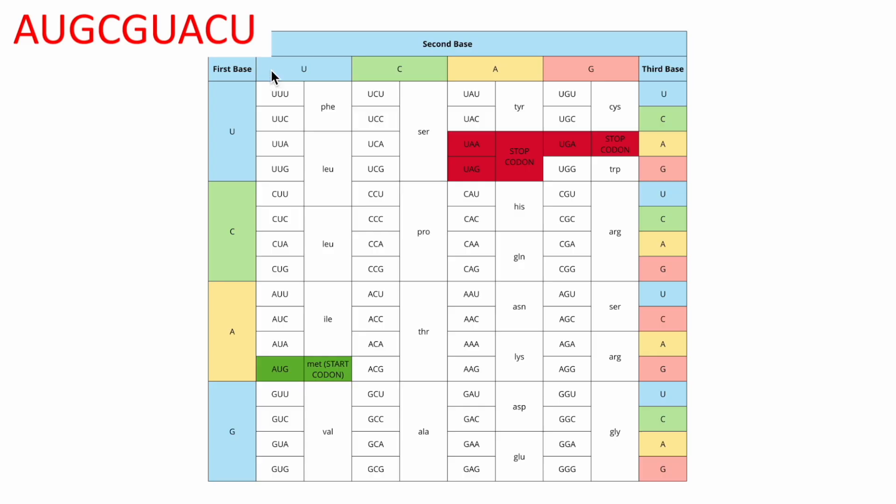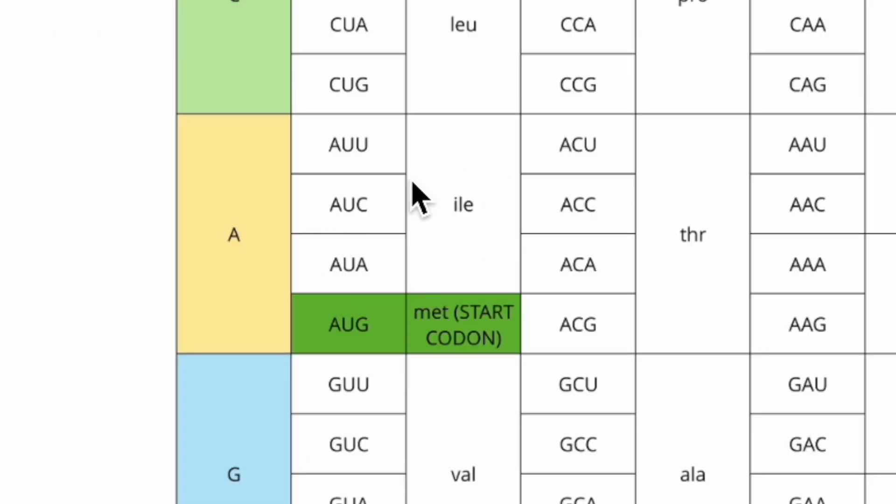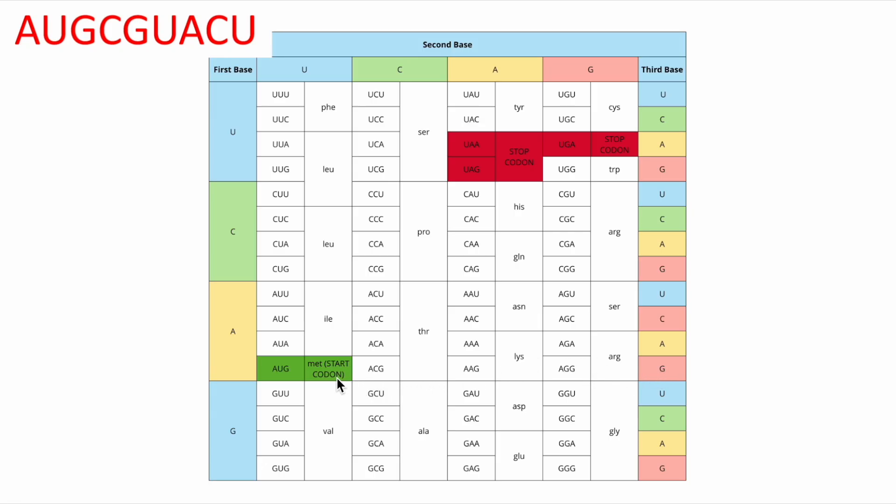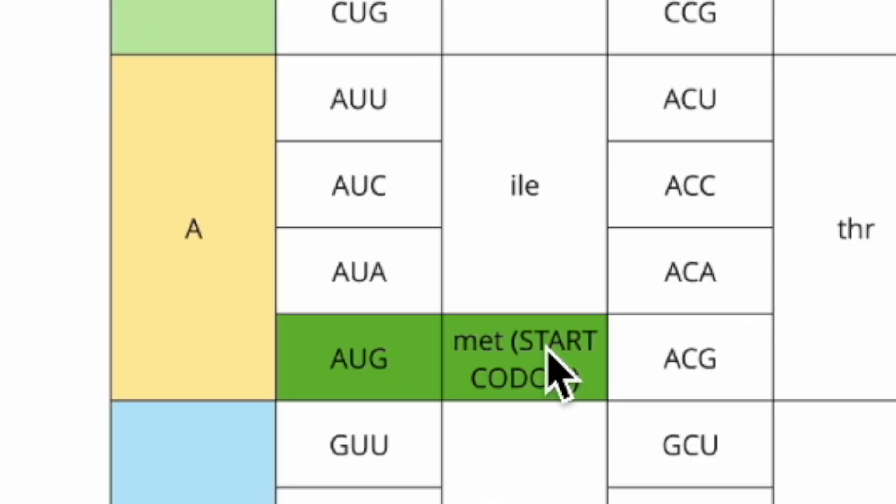Then we're going to find our second letter, which is U. So we know we're somewhere in this zone right here. And then we're going to look on this side, G, and there's AUG that corresponds to MET, again, which is our start codon.